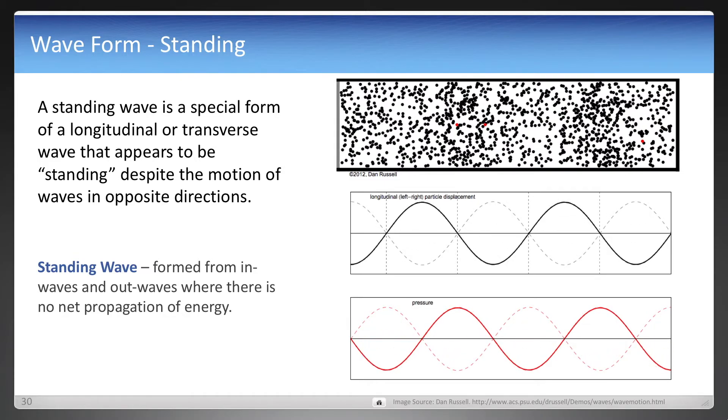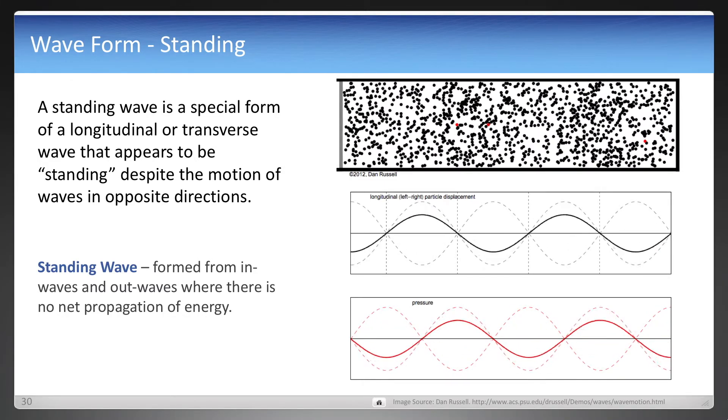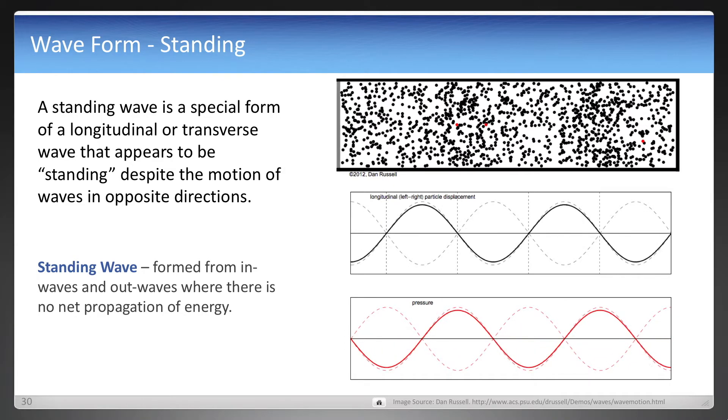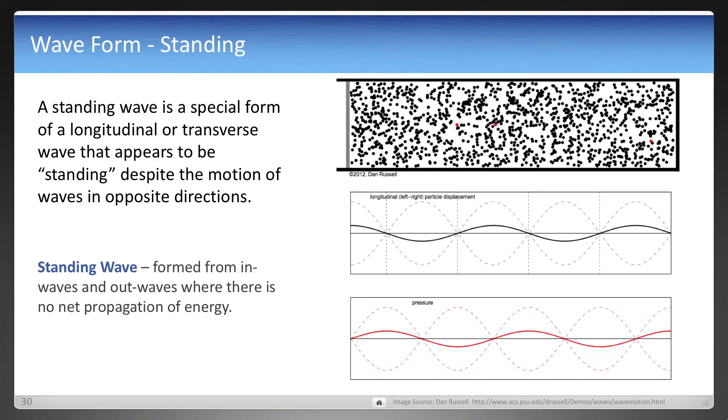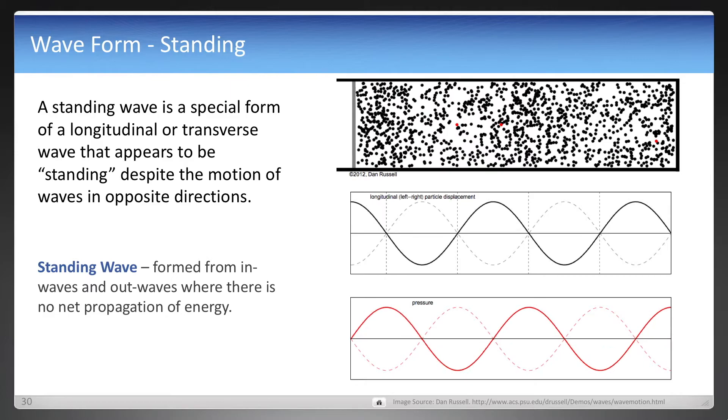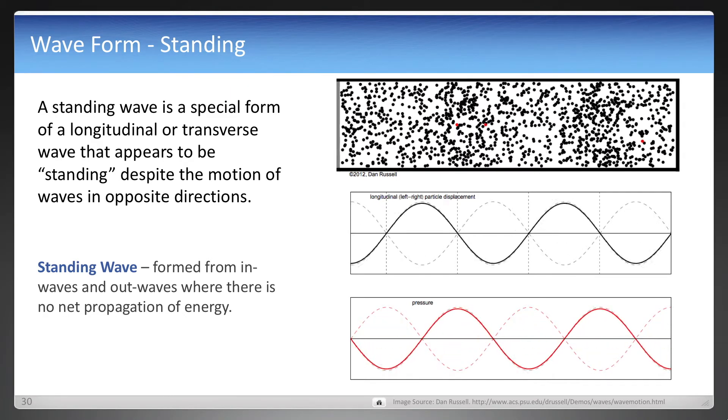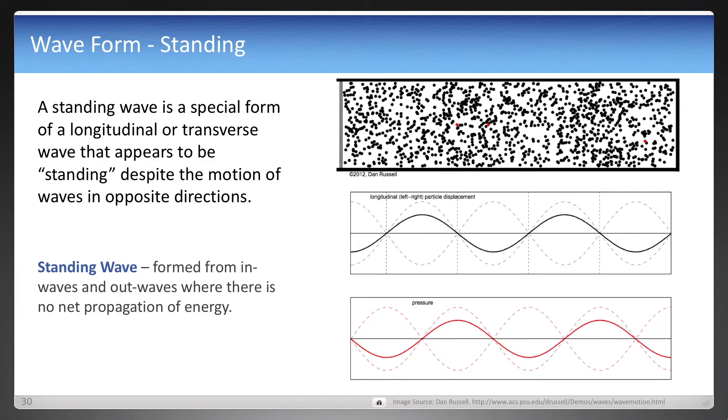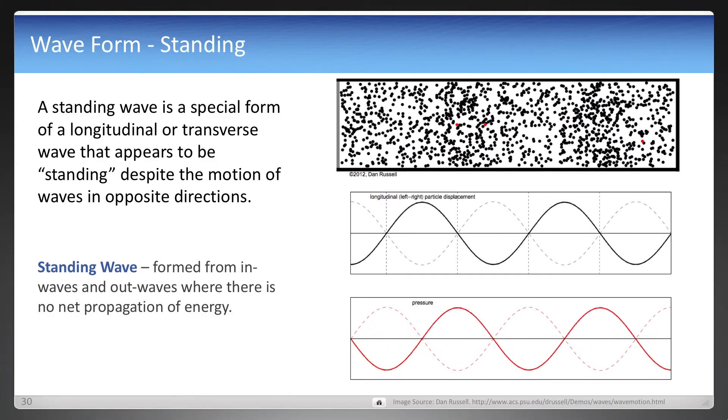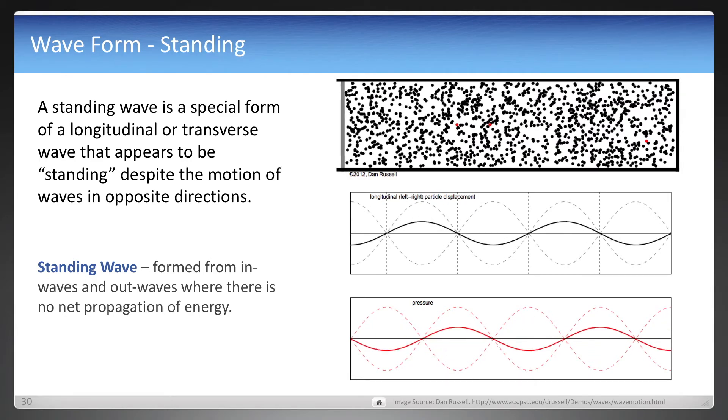One more thing about waves is the form. They can be traveling, or they can also be standing in form. And a standing wave is when you have waves of the same frequency traveling in opposite directions, and it might form a wave such as this where it just appears to be going up and down.